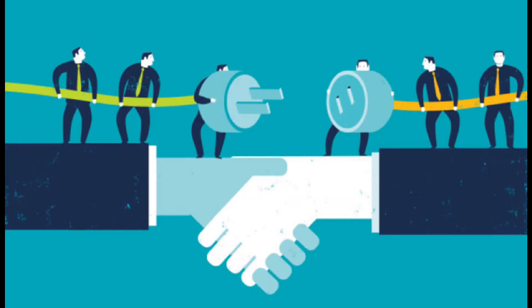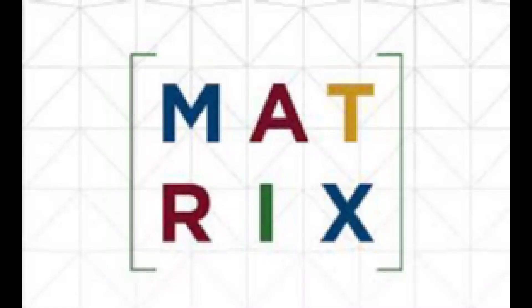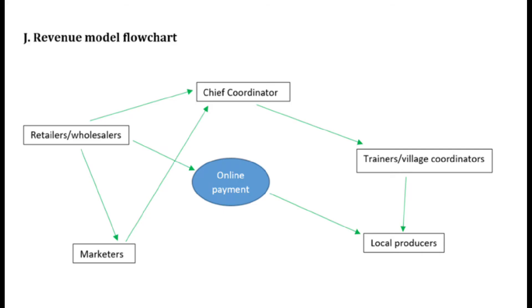Our key partners are local farmers, mainly women and from deprived community groups, who are the focal points of the project. Our key activity is based on the working matrix model, which you can see on this video.